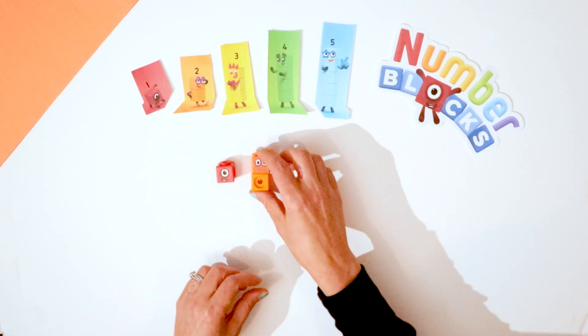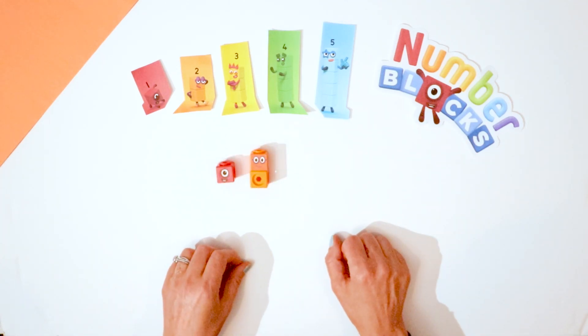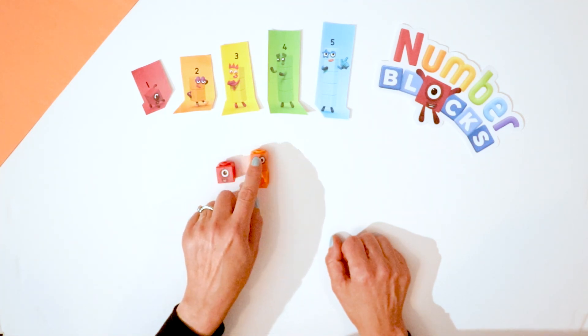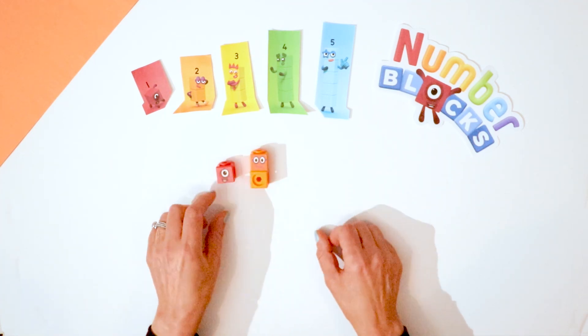One plus two equals three. One, two, three. One plus two equals three.